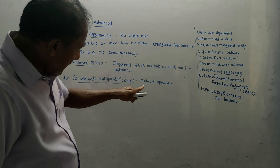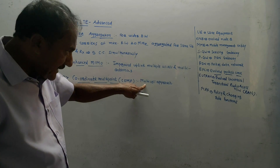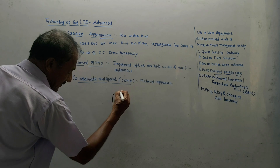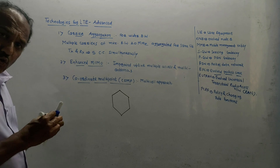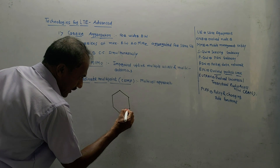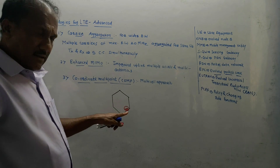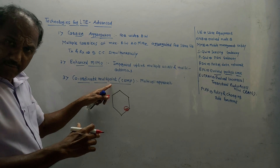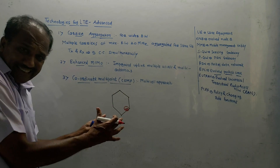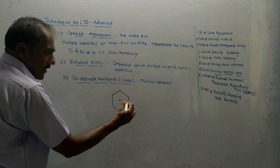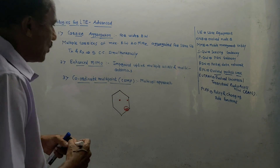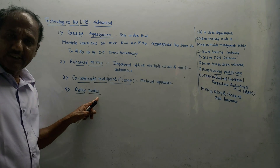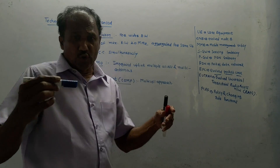The third technology is coordinated multipoint, or CoMP. It makes use of coordination between multiple points — a multi-cell approach where many cells are coordinated together. Cells have a hexagonal structure. In normal technology, if a user is at the edge of a cell there is less coverage, but with CoMP, many cells are coordinated simultaneously so that even if the user is at the edge of a cell, efficiency remains the same, giving better performance.